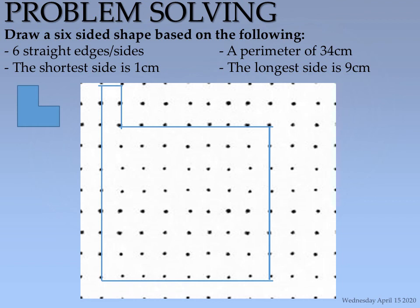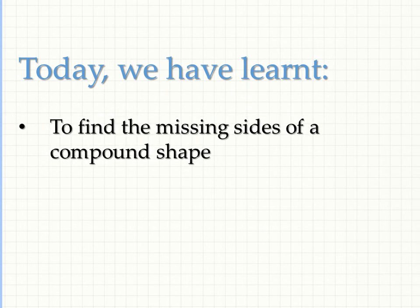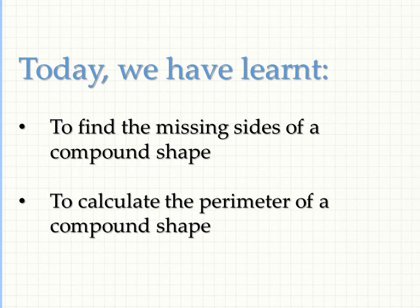So students, we've come to the end of this lesson. Today we learned to find the missing sides of a compound shape and to calculate the perimeter of a compound shape. Make sure you do the workbook pages 202 to 204. We have another lesson tomorrow — take care of yourselves and have a good day, bye!